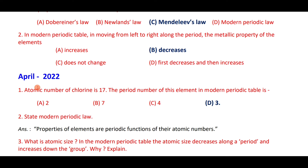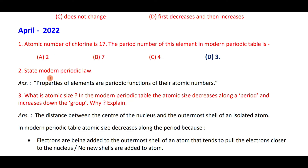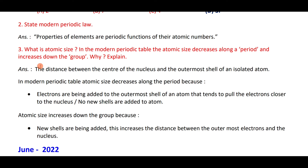Chlorine has atomic number 17 and three shells, so it belongs to period 3. Modern periodic law: properties of elements are periodic functions of their atomic numbers. Atomic size is the distance between the center of the nucleus and the outermost shell of an atom.